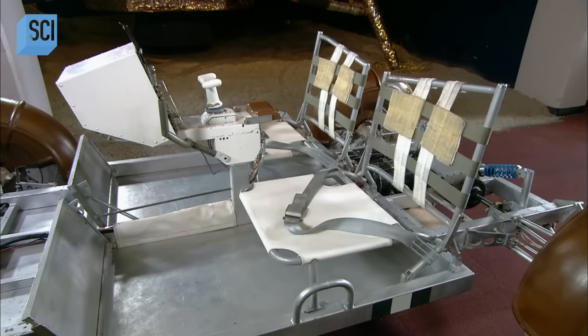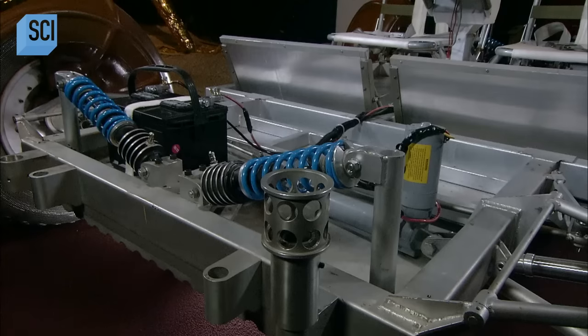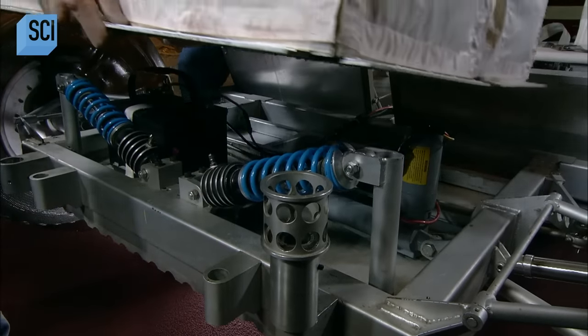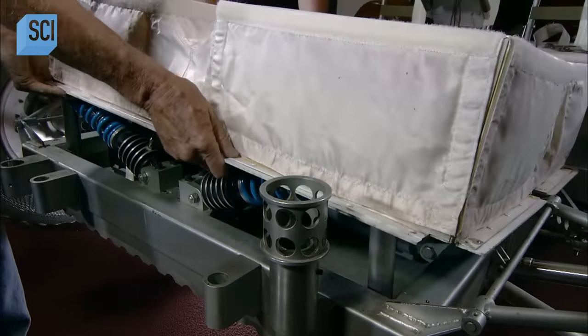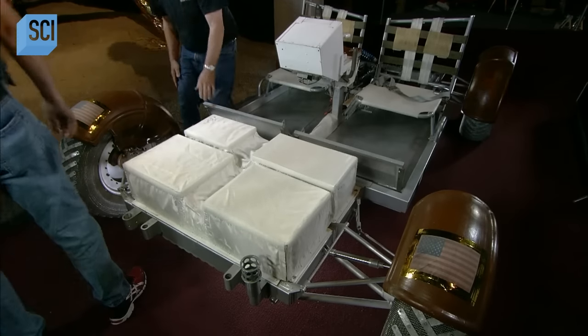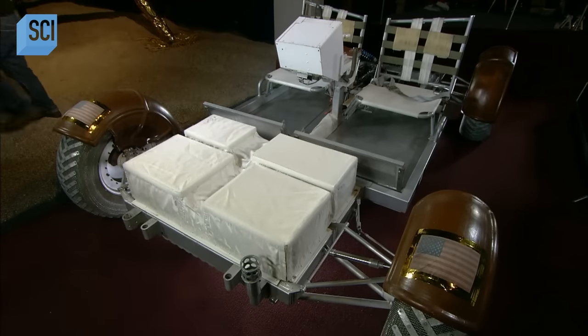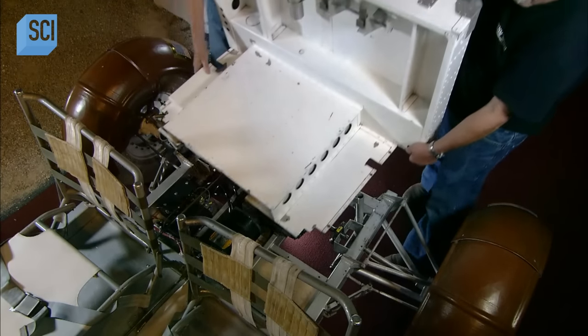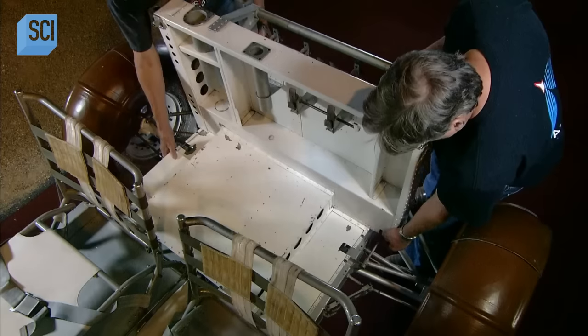The lawn chair-like seats are next. They cover the shocks and battery at the front with an aluminum hood. They also install a cover over the mechanics at the back. It doubles as a rack for tools for geological excavation.